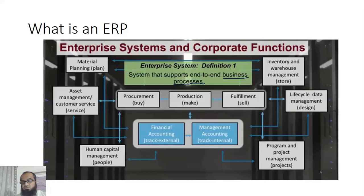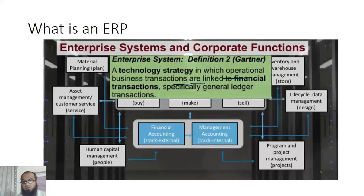If an employee leaves and comes back, we don't need to enter his data again — his core data remains in the system and is simply reassigned to a new employee ID. Similarly, when a vendor comes for a transaction, their sales tax number, national tax number, and all other details — known as master data — are entered only once. If there are separate systems for finance, accounting, and purchases, vendor data gets entered multiple times, causing duplication. The Gartner definition describes ERP as a technology strategy in which operational business transactions are linked to financial transactions — specifically general ledger transactions.